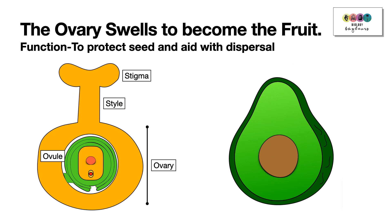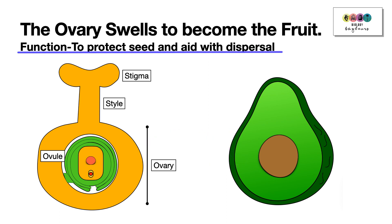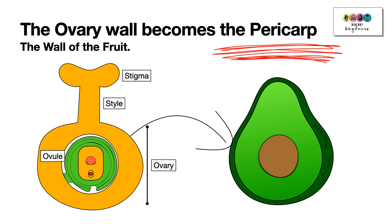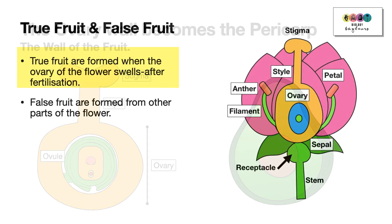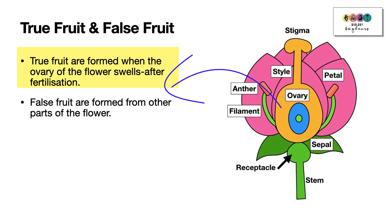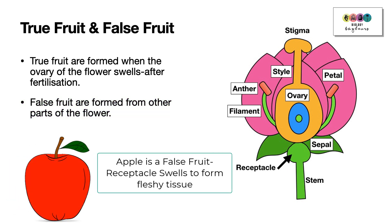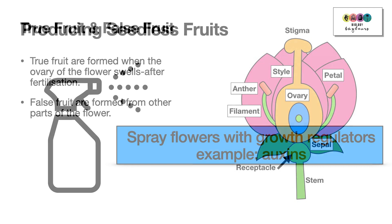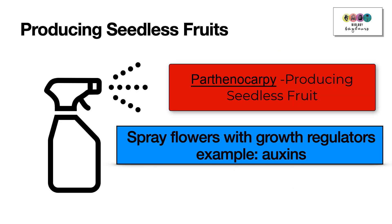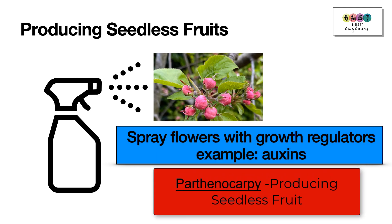The function of the fruit is to protect the seed and to aid with its dispersal. The fruit forms when the ovary swells after fertilisation, and the ovary wall becomes the pericarp — the wall of the fruit. Fruits are classified as true fruits, formed from the ovary alone, or false fruits, such as the apple, where the receptacle also swells. Seedless fruits can be produced by spraying the flowers with growth regulators such as auxins — this is known as parthenocarpy.